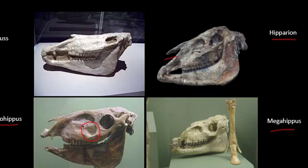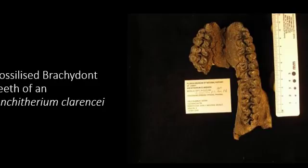A few species of the genus Equus are extinct. They include giant horses with a flat face and long head. Ankytherium clarency were species of horse found in the late Miocene. They were browsing animals, so they had brachyodont teeth, meaning they had low crown teeth.